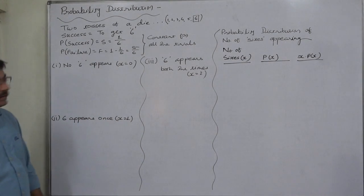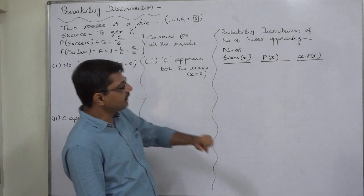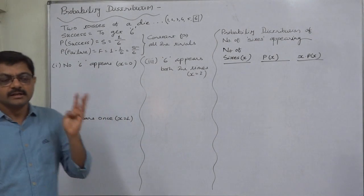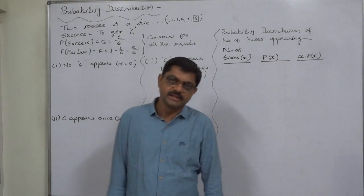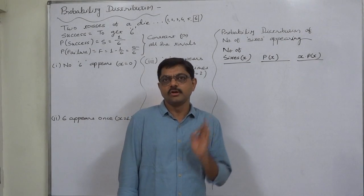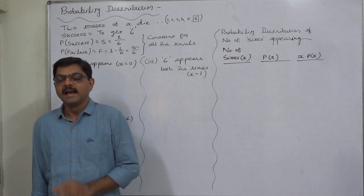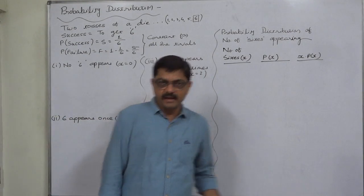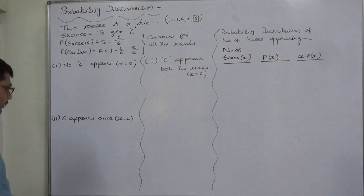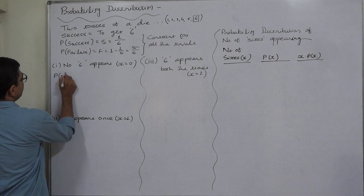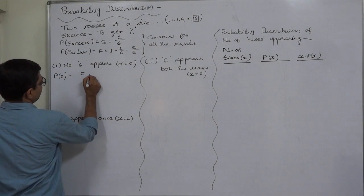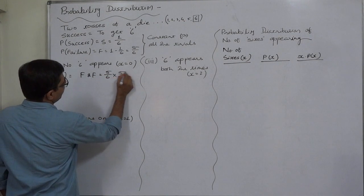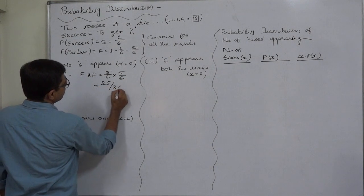Since there are only two trials, we can never have more than two sixes and never less than zero, so there are three mutually exclusive and exhaustive outcomes: X equals zero, X equals one, and X equals two, where X is the random variable for the number of sixes. P(X=0) is failure in first trial and failure in second: five by six times five by six, which equals twenty-five by thirty-six.